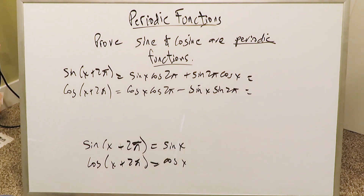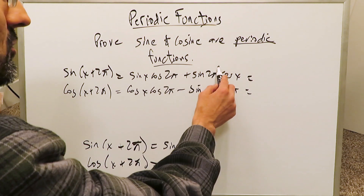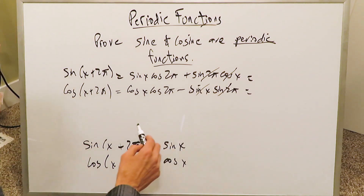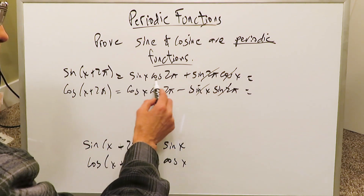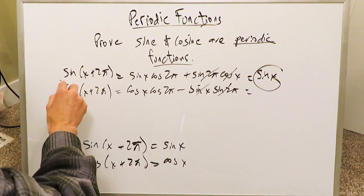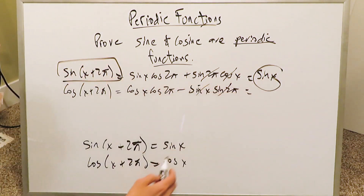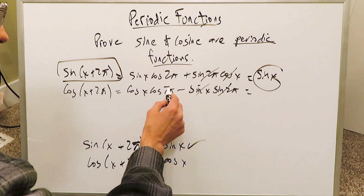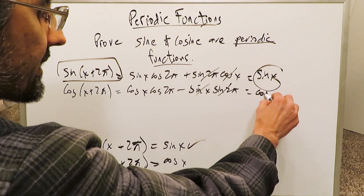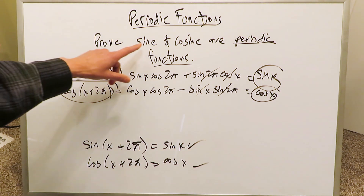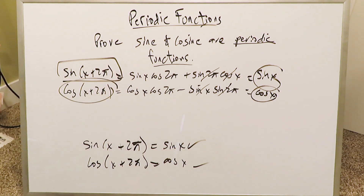You don't have to do anything other than simplify. When you have sine 2π, it zeroes out. Looking here, sine 2π zeros everything out. Cosine 2π equals 1, which leaves just sine x. So you're showing that sine(x + 2π) is indeed equal to sine x. Similarly, the sine 2π term zeros out, and cosine 2π equals 1, keeping cosine x. You've proven that sine and cosine are indeed periodic functions.